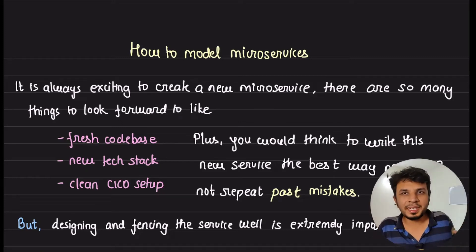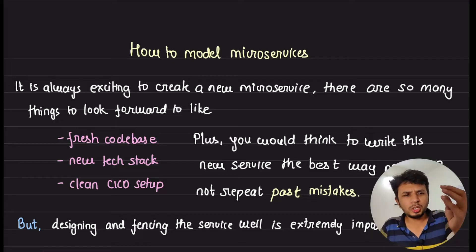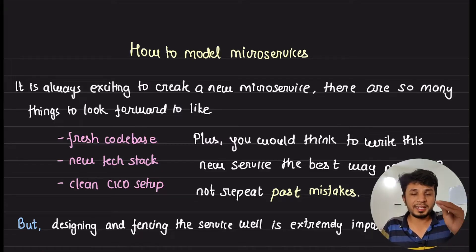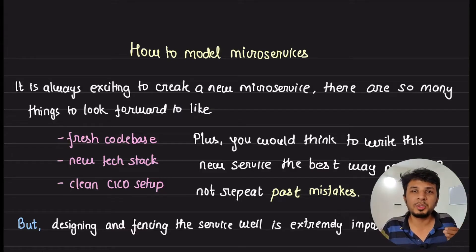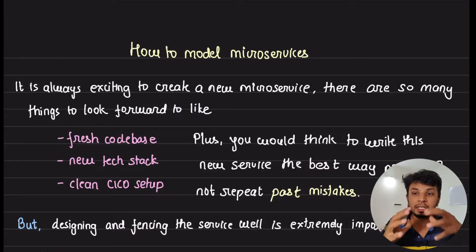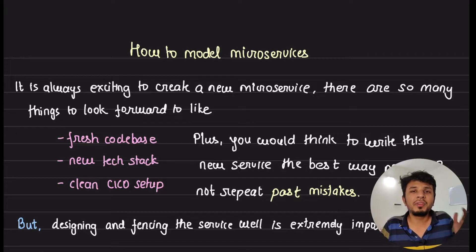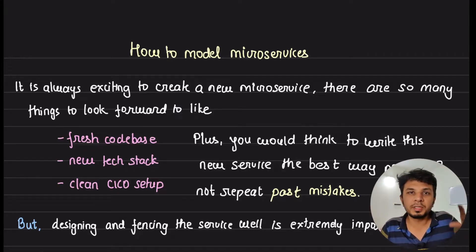Microservices are extremely tempting. You will always feel like writing a new service to solve every single problem at hand. You can go to a very fine granular level to write a microservice for every single micro requirement you have, versus keeping a lot of them together to solve a bigger problem. But which approach is best? How can we decide whether we need a separate microservice to solve a specific problem?